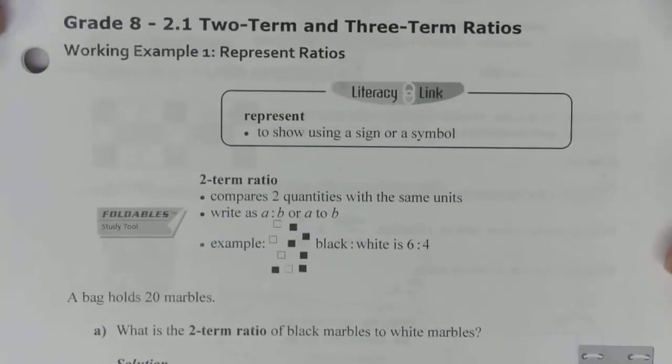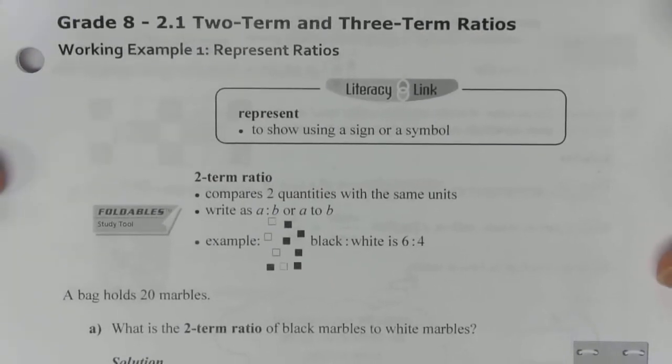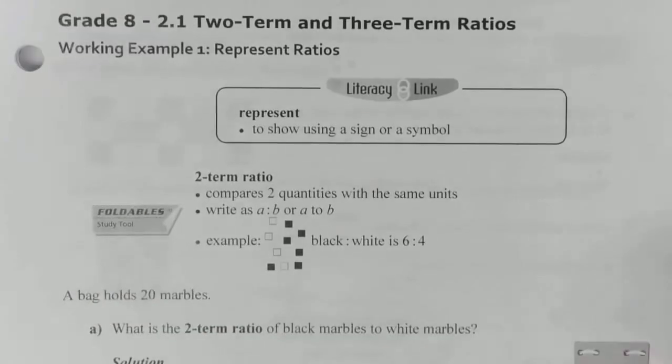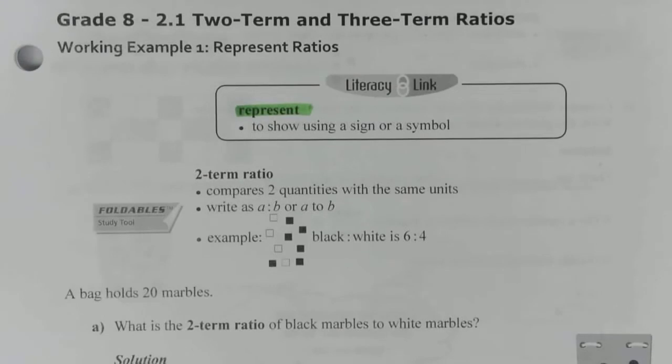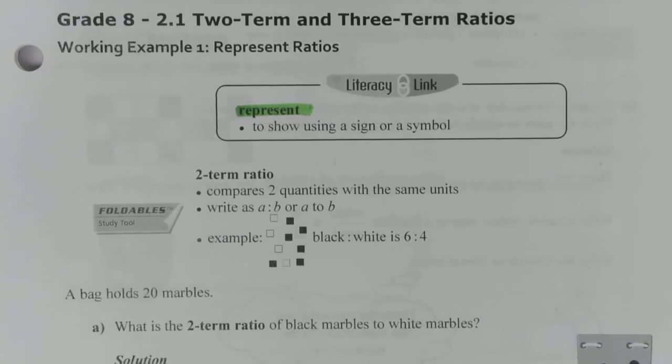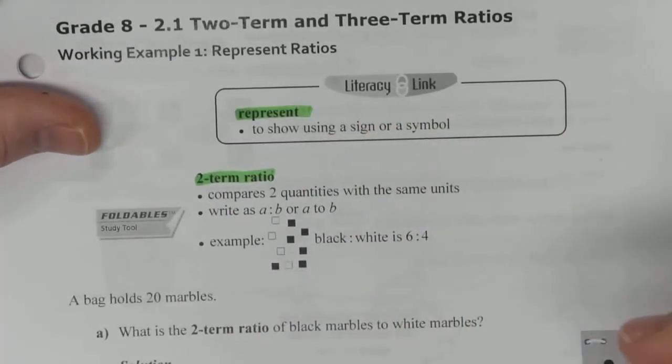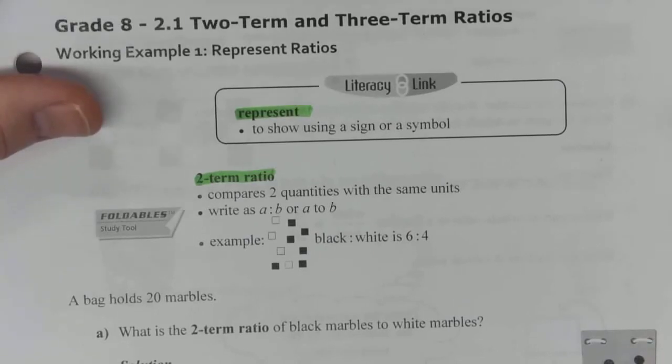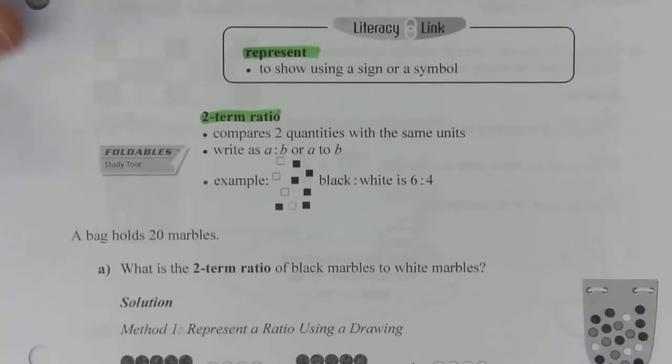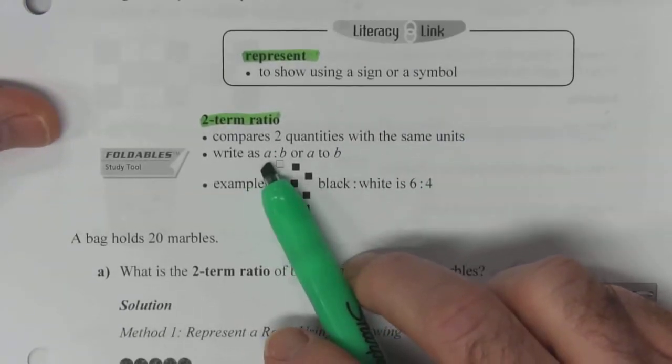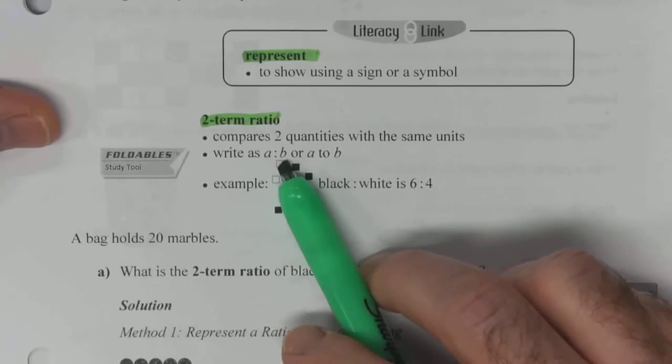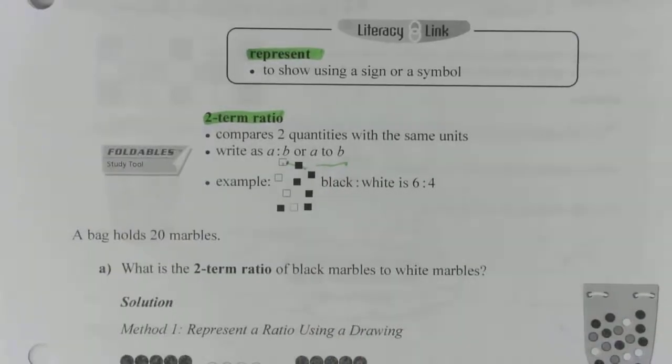Alright, let's begin chapter, section 2.1, two-term and three-term ratios. So to start off, we have a definition. Represent is to show using a sign or a symbol. So you're going to express something, use a sign or a symbol. Another definition here is a two-term ratio. So you're going to compare two, that's where the two-term comes from, two quantities with the same units. Now, in a ratio, you can express them, or write them as A colon B, which is actually read A to B. So you can write it as A to B as well.